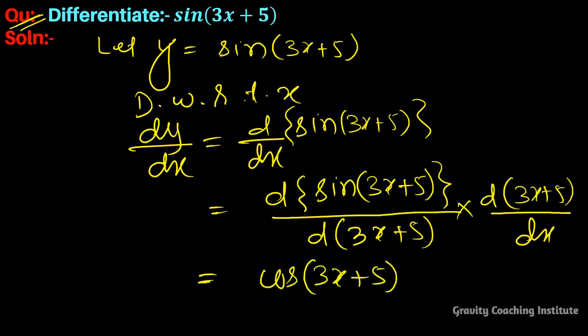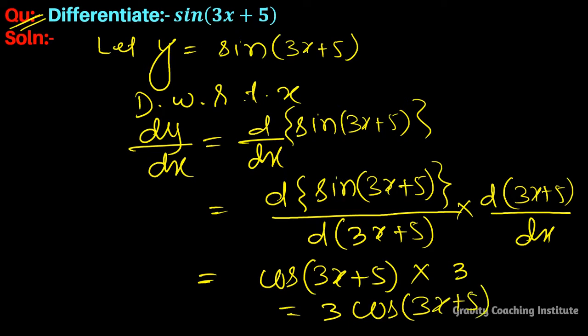The derivative of 3x equals 3, and the constant term gives 0. So the final answer is 3cos(3x + 5).